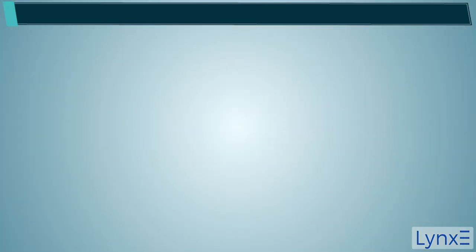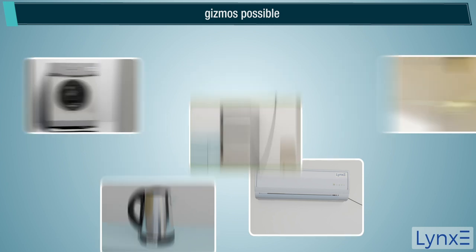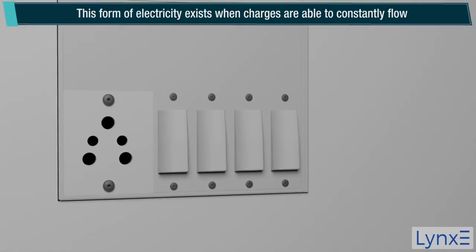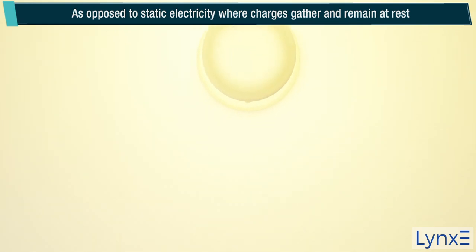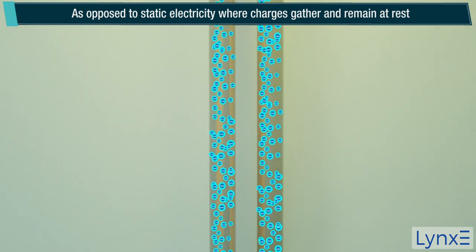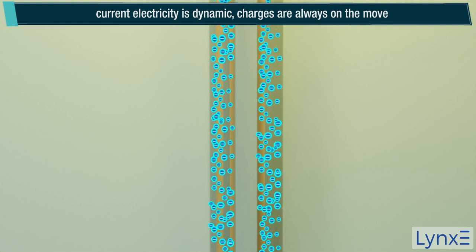Current electricity. Current electricity is the form of electricity which makes all of our electrical and electronic gizmos possible. This form of electricity exists when charges are able to constantly flow. As opposed to static electricity where charges gather and remain at rest, current electricity is dynamic. Charges are always on the move.